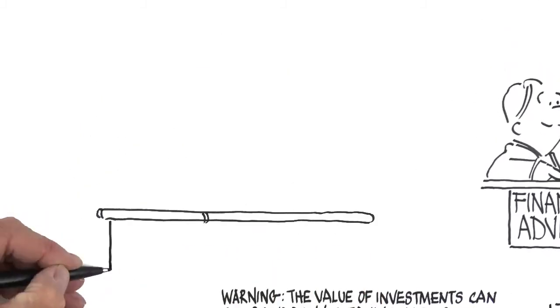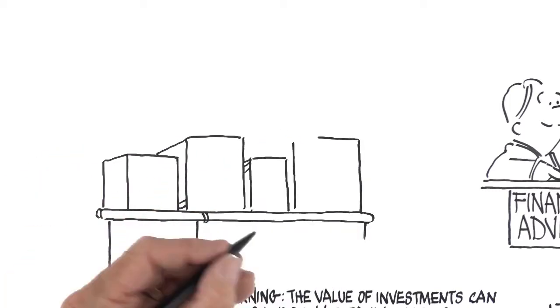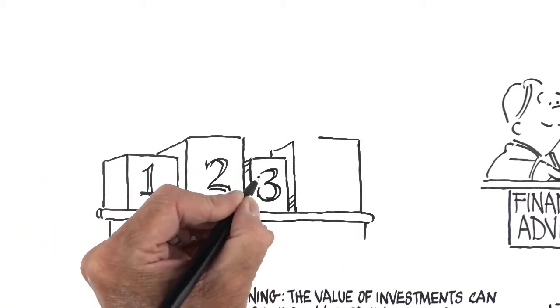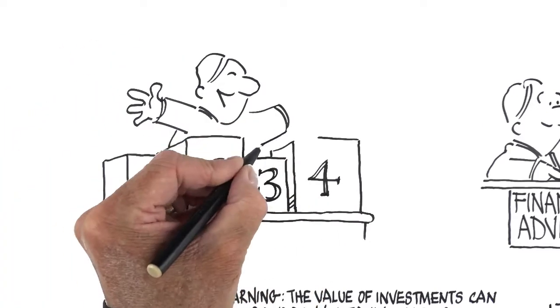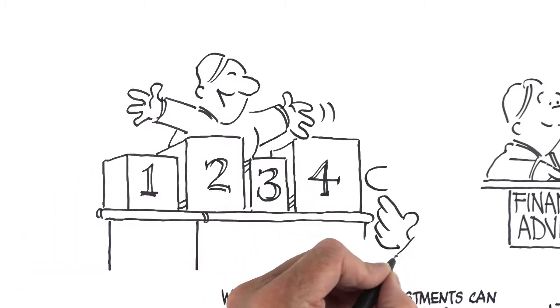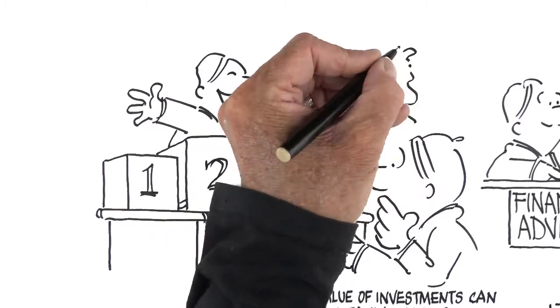Alex isn't sure which of these different assets are for him, but his financial advisor explains that Friends Provident International's offshore life insurance policies invest in funds which do the work for him. All Alex needs to do is to select funds with a mix of investments which suit his personal needs.